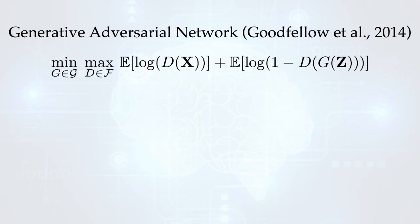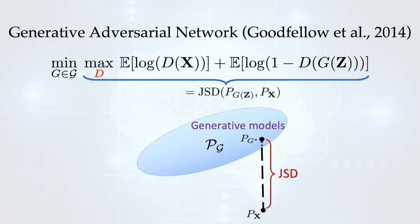The question is: what is the interpretation of this minimax problem? In the original GAN paper, it was shown that when D is unconstrained and is trained over the entire space of functions, GAN basically minimizes the Jensen-Shannon divergence between the generative model and data distribution.